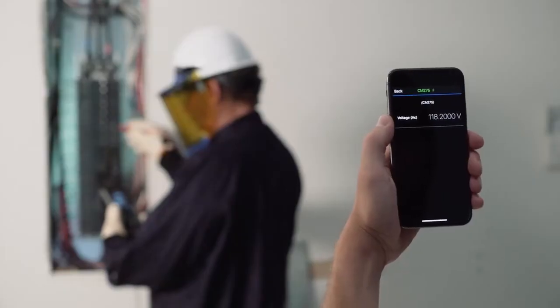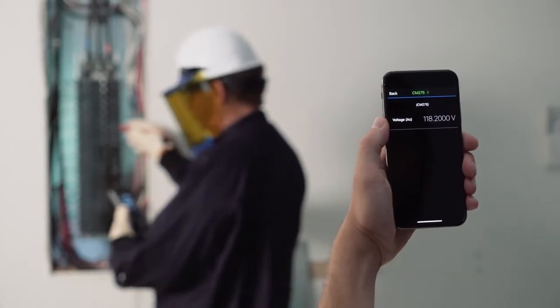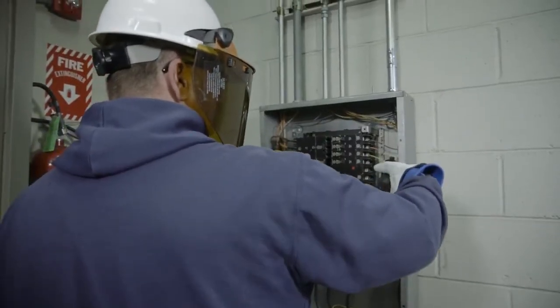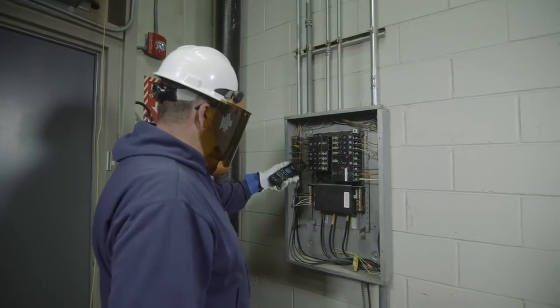Or streamline your work by uploading data to the FLIR Tools app with Meter Link. The FLIR CM275 IGM Clamp Meter with Data Logging. The all-in-one troubleshooting tool you need for electrical, mechanical, and electronic systems.